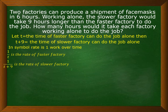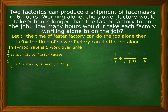The combined rate is equal to one work over the number of hours they work together, which is six hours. So this is now your equation. The rate of the faster factory plus the rate of the slower factory equals one over six. Your equation is: one over T plus one over T plus nine is equal to one over six.